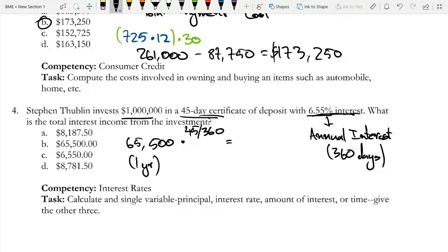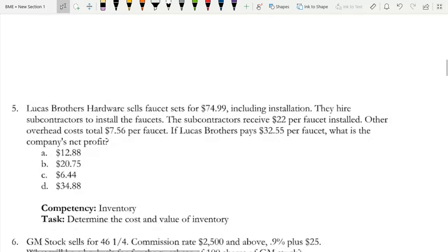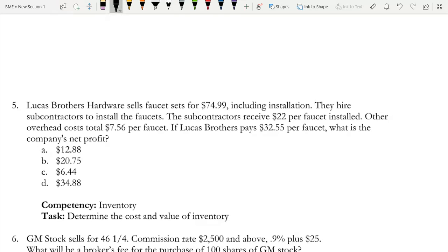If I do this on my calculator, $65,500 times 45 over 360, that is equal to $8,187.50, and that is option A. Now on to, I think, the last question for the day—last question for the video, at least. Lucas Brothers Hardware sells faucet sets for $74.99, including installation. They hire subcontractors to install the faucets. We should probably underline 'including installation.' The subcontractors receive $22 per faucet installed. Other overhead costs totaled $7.56 per faucet. If Lucas Brothers pay $32.55 per faucet, what is the company's net profit?